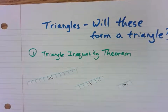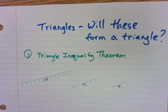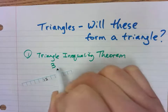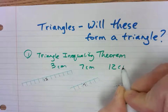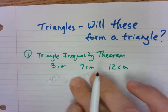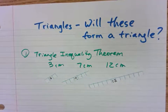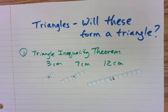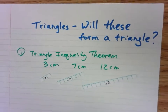Can I take the twelve, seven, and three and will those form a triangle? Going from least to greatest, I've got a three centimeter piece, a seven centimeter piece, and a twelve centimeter piece. Before I show you how it works out, do you think the three, seven, and twelve will actually form a triangle? It's going to be a yes or no answer.